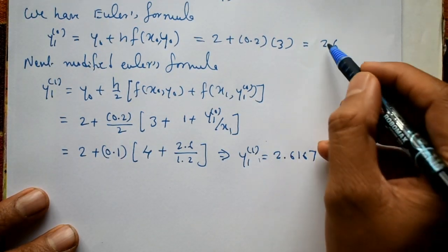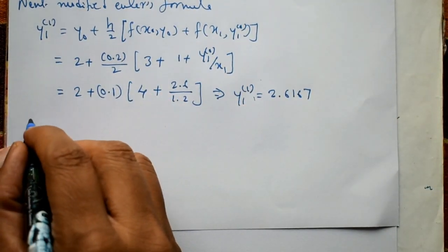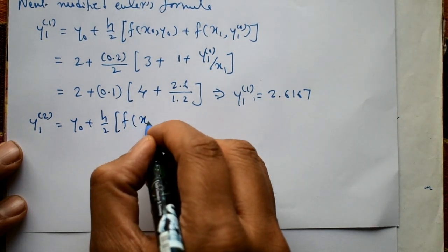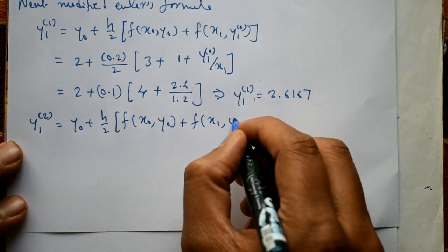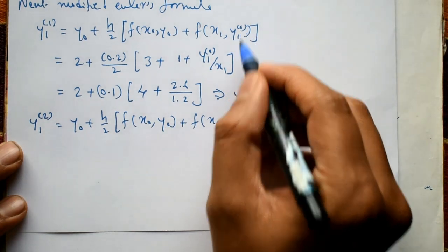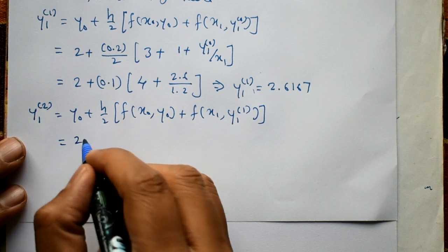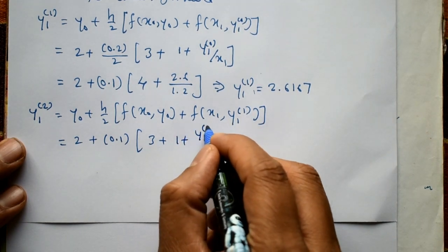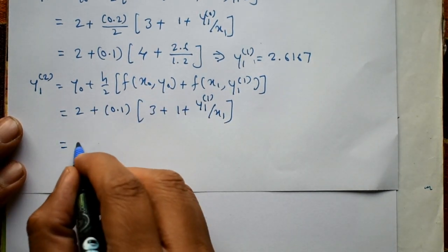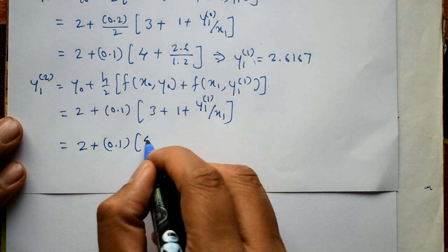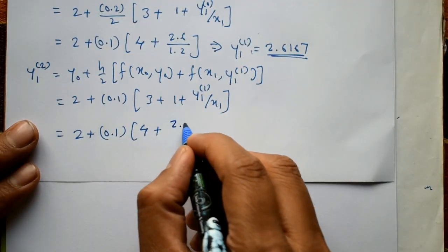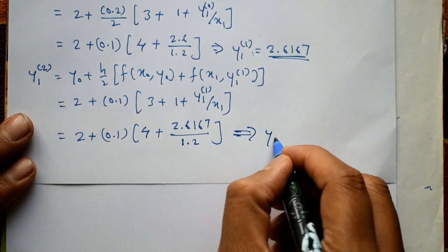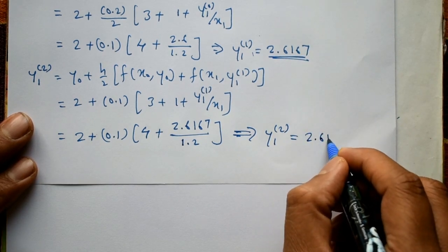This approximate value is different from the previous; iterations continue. For y1²: y0 plus h by 2 into f of x0, y0 plus f of x1, y1¹. Substituting: 2 plus 0.1 into 3 plus 1 equals 4, plus y1¹ value 2.6167 divided by x1 equal to 1.2. This gives y1² equal to 2.6181.